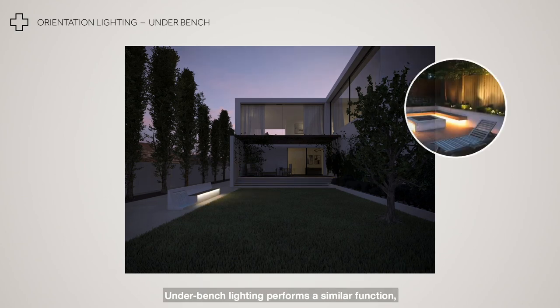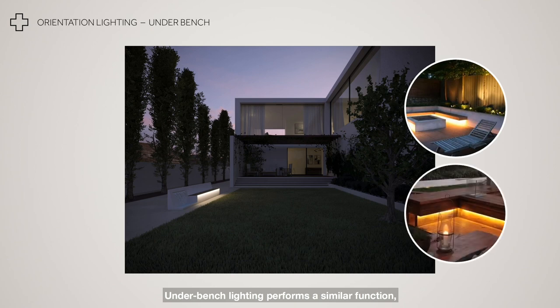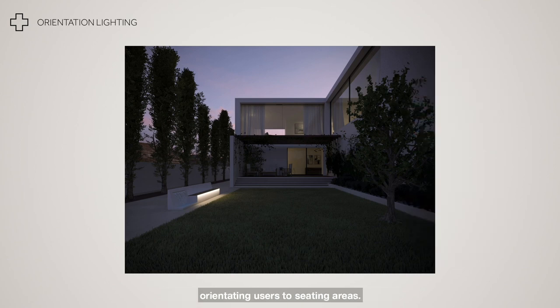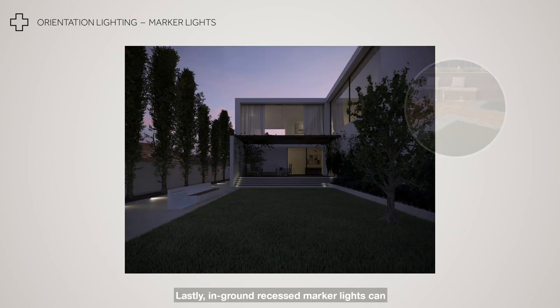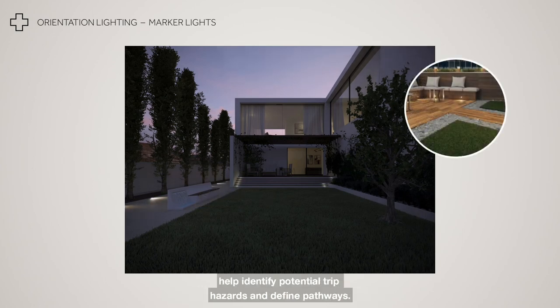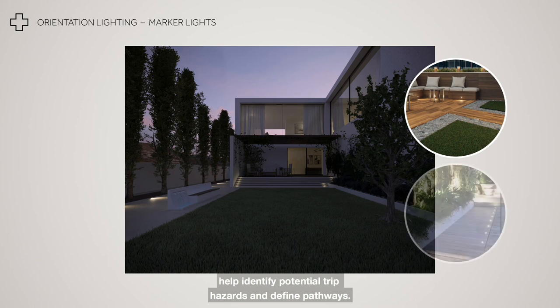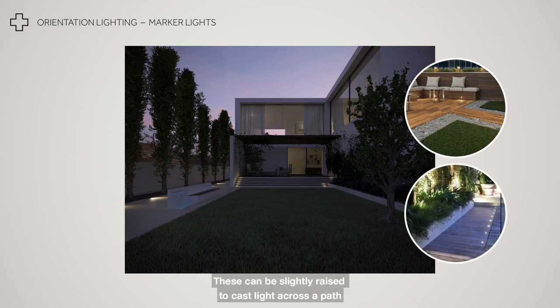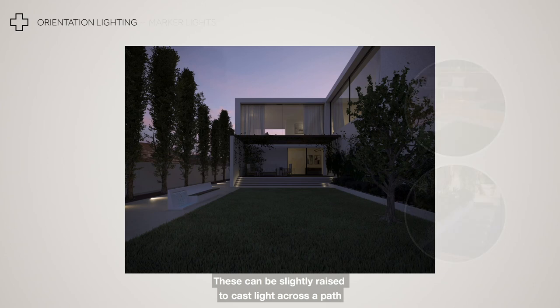Under bench lighting performs a similar function, orientating users to seating areas. Lastly, in-ground recessed marker lights can help identify potential trip hazards and define pathways. These can be slightly raised to cast light across a path, revealing its texture and the extent of the floor finish.